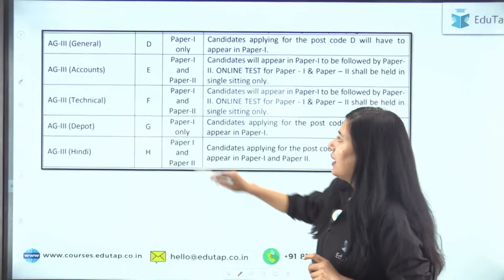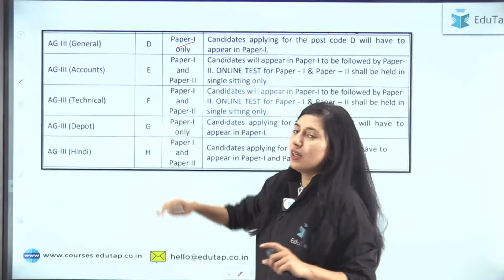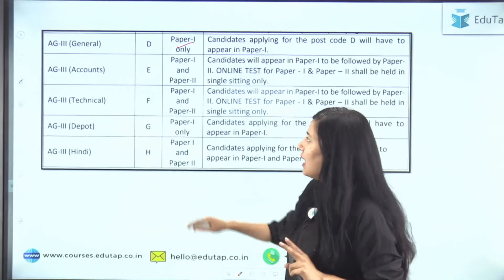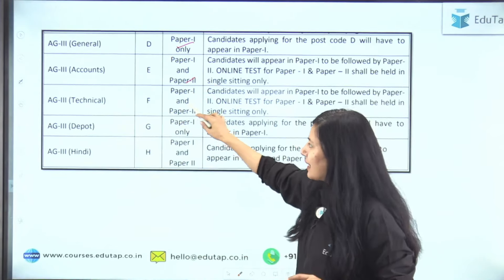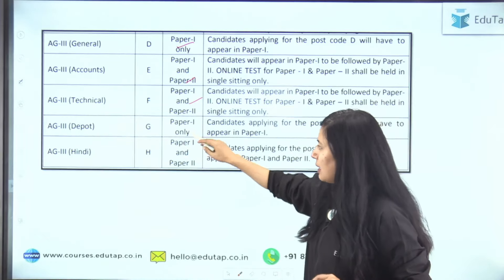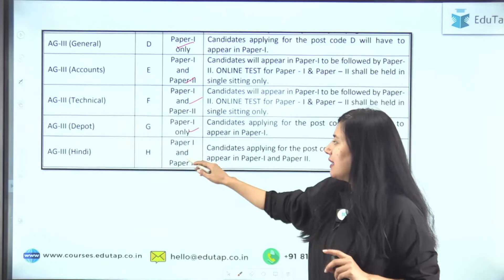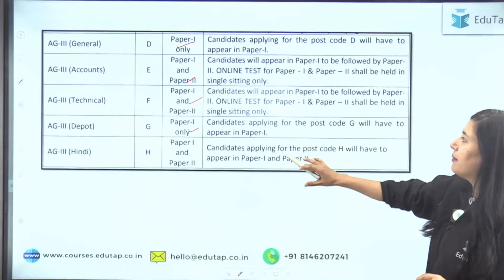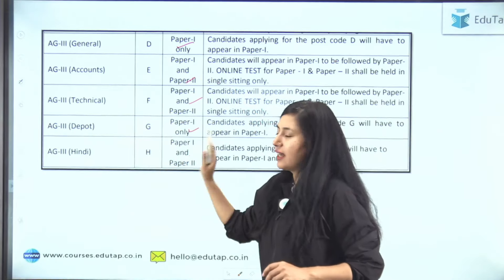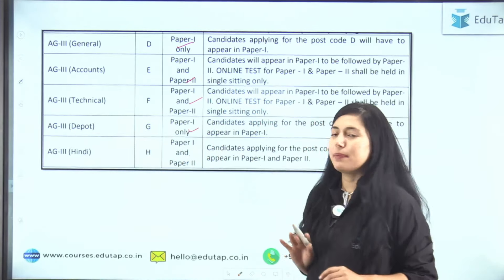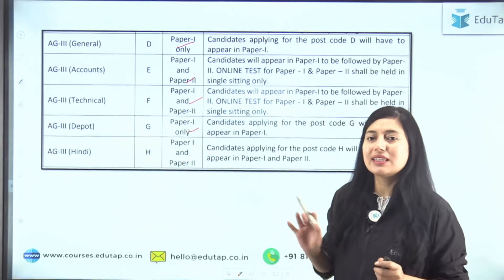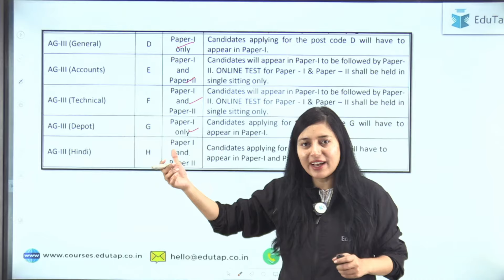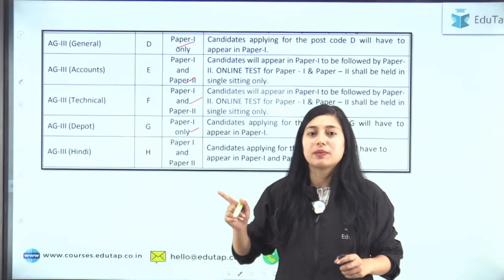For example, AG3 General mein only Paper 1 is required — Paper 2 nahi hoga inka. Accounts mein Paper 1 aur Paper 2 hoga. Technical mein Paper 1, Paper 2 hoga. Depot mein Paper 1 hoga. Hindi mein Paper 1 aur Paper 2 hoga. So aapne apna post code dekh lena hai aur apne kaun sa paper dena hai. Once you know this, then dekhtein hain Paper 1 mein kya aayega aur Paper 2 mein kya aayega.